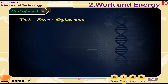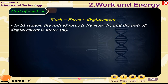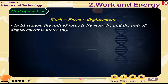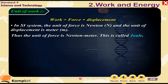The unit of work: since work equals force multiplied by displacement, in the SI system the unit of force is newton (N) and the unit of displacement is meter (m). Thus the unit of work is newton-meter, which is called the joule (J).